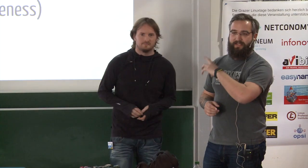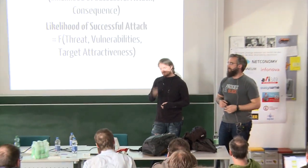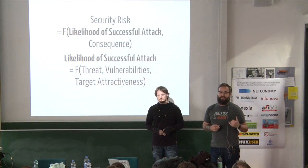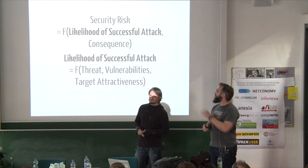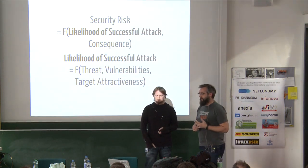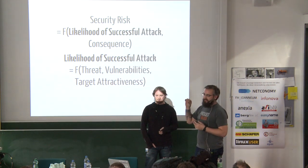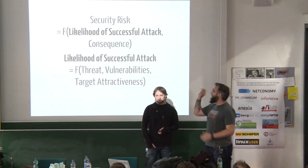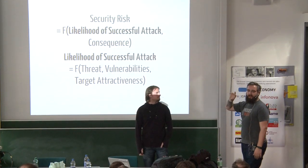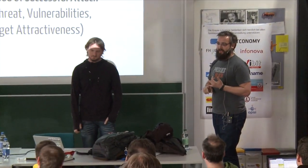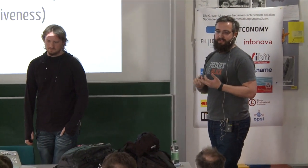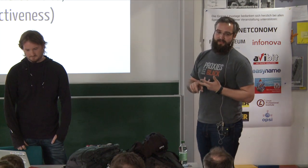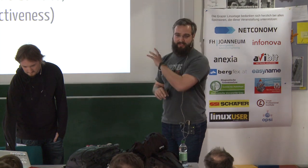Security risk can be defined as the likelihood of a successful attack multiplied by the consequences. If consequences are zero, the security risk is also zero. The likelihood of a successful attack is composed of the threat, the vulnerabilities, and the attractiveness as a target. If there's no threat, likelihood is very low; if you have zero vulnerabilities, the success part goes to zero; and if you're not attractive as a target, a successful attack is also unlikely.